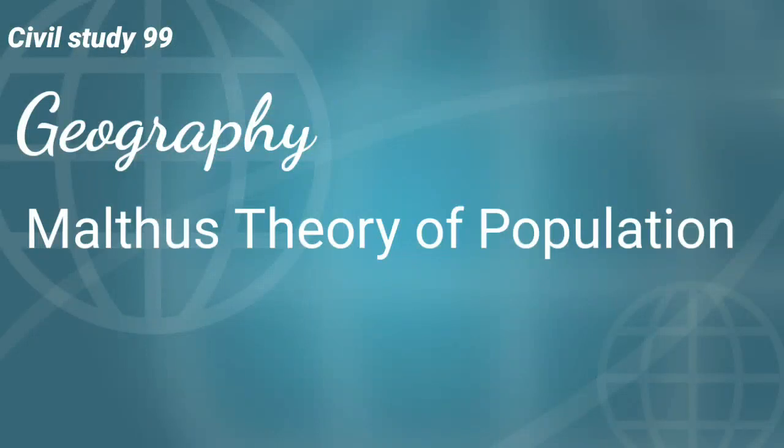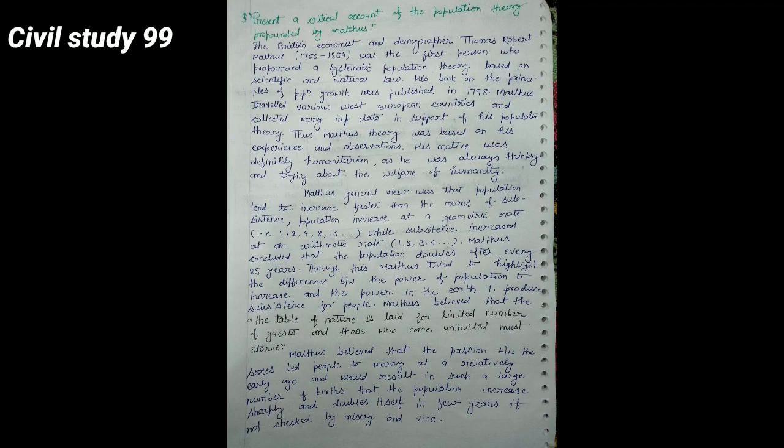Hello friends. In this video we will try to solve one question: present a critical account of the population theory propounded by Malthus. First we will see introduction, then his theories, and after that we will see criticism of his theory. The British economist and demographer Thomas Robert Malthus was the first person who propounded a systematic population theory based on scientific and natural law.